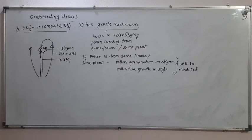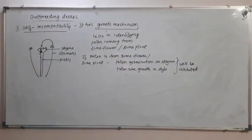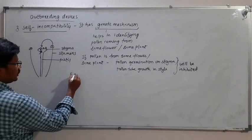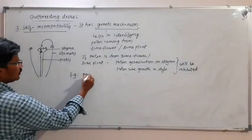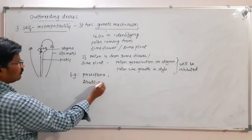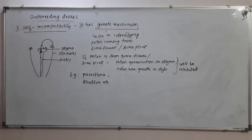Self-incompatibility prevents autogamy and favors only cross-pollination or xenogamy. If pollen from the same plant is not allowed to germinate, it also prevents geitonogamy. Examples of plants showing self-incompatibility include Passiflora and Abutilon.